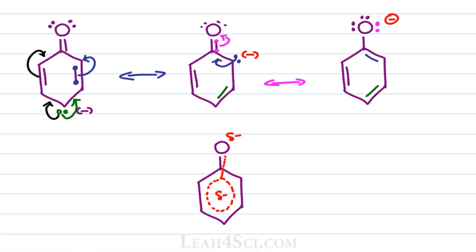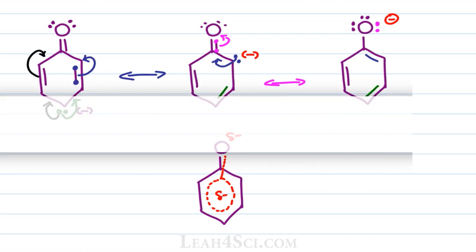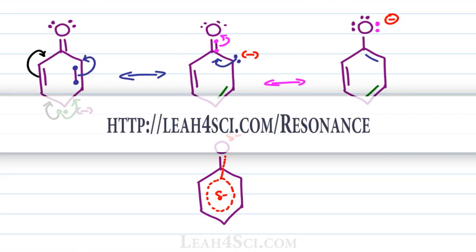So if you have so many options, how do you know where to start? Do you start at the lone pairs? Do you start at the pi bonds? What happens when you have a carbocation? That's exactly what we'll discuss in the next video. Be sure to watch this entire resonance series, download the cheat sheet so you have all the rules in front of you at a quick glance, and once you're comfortable with the material, try the practice quiz to see how well you do. You can find all of this at leah4sci.com/resonance.